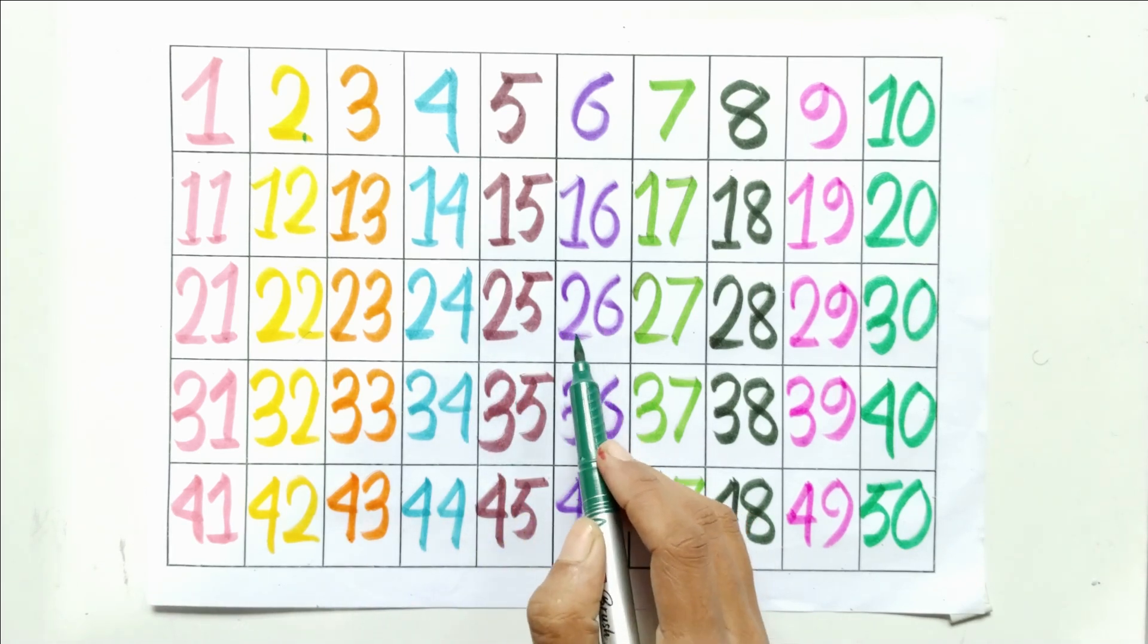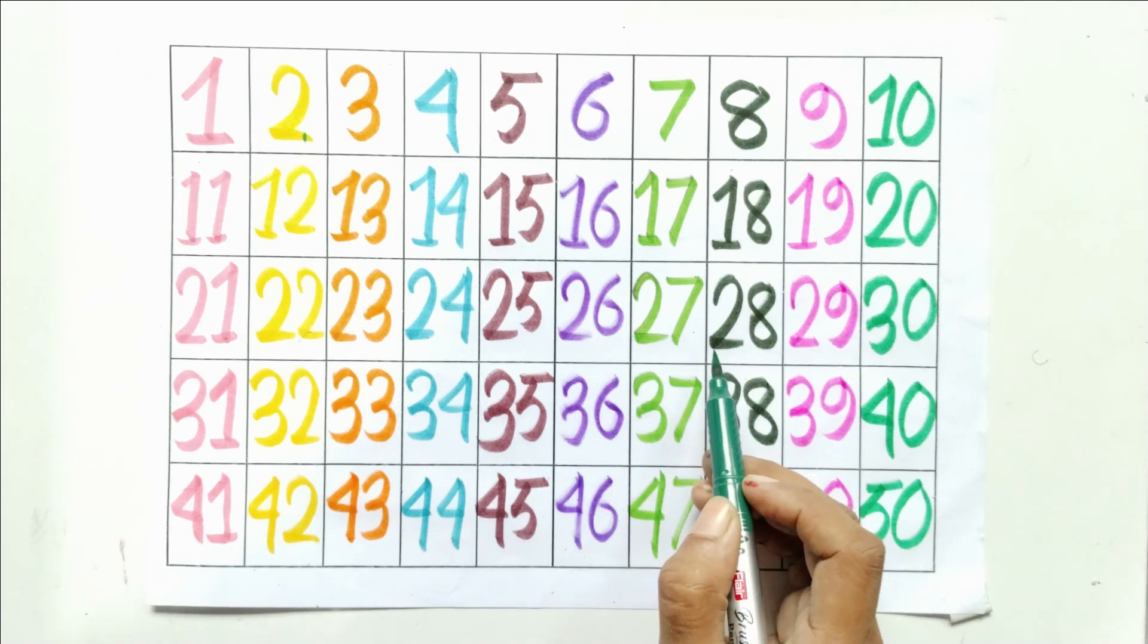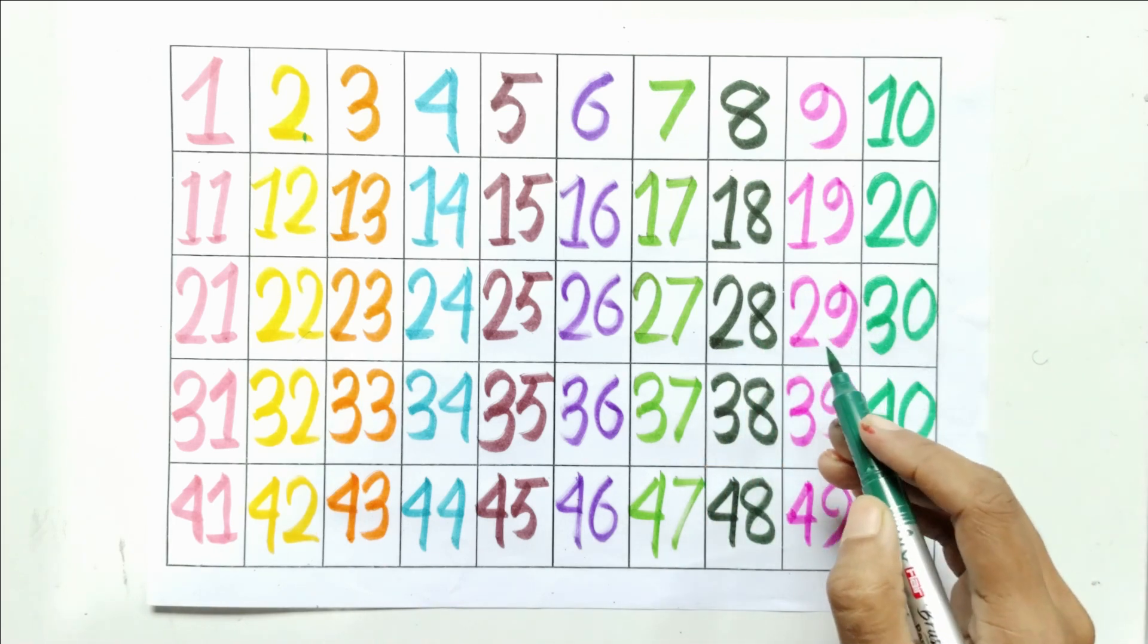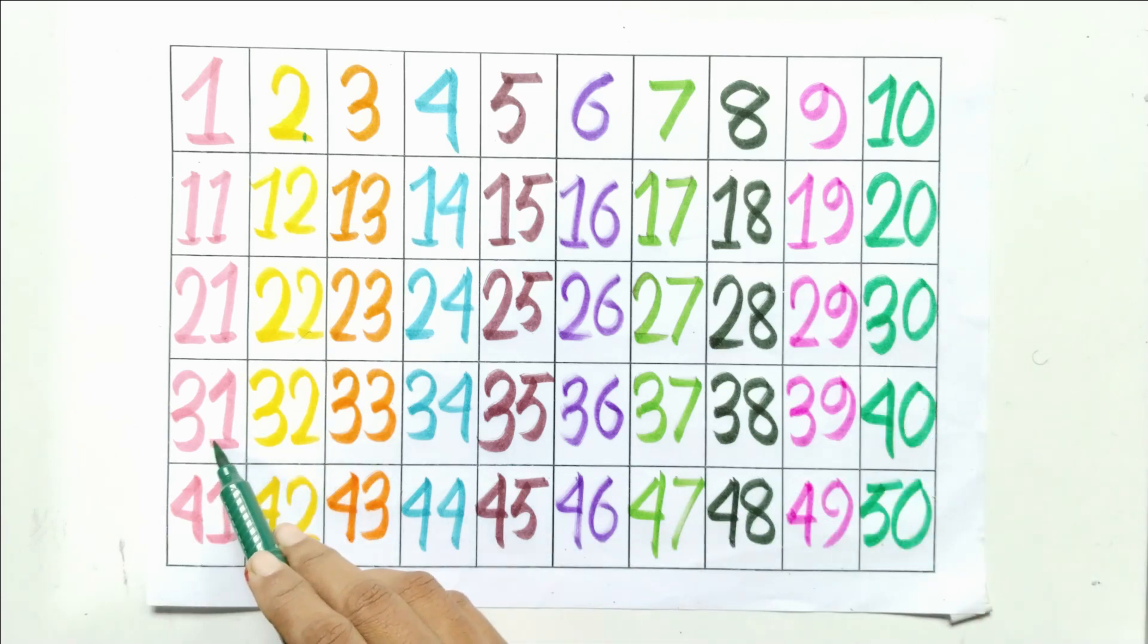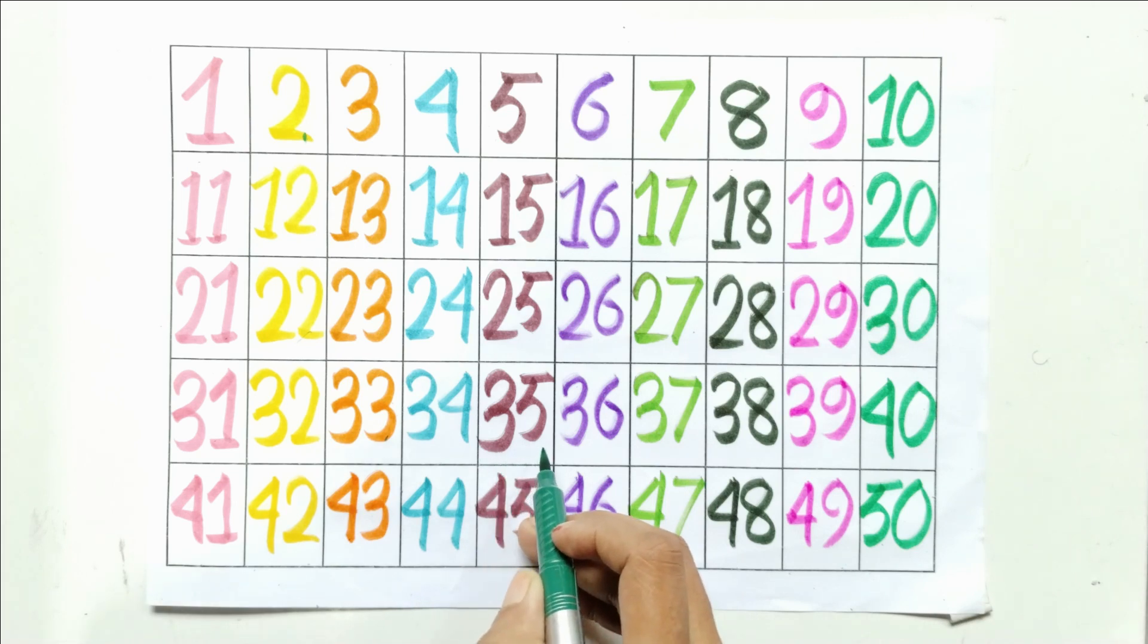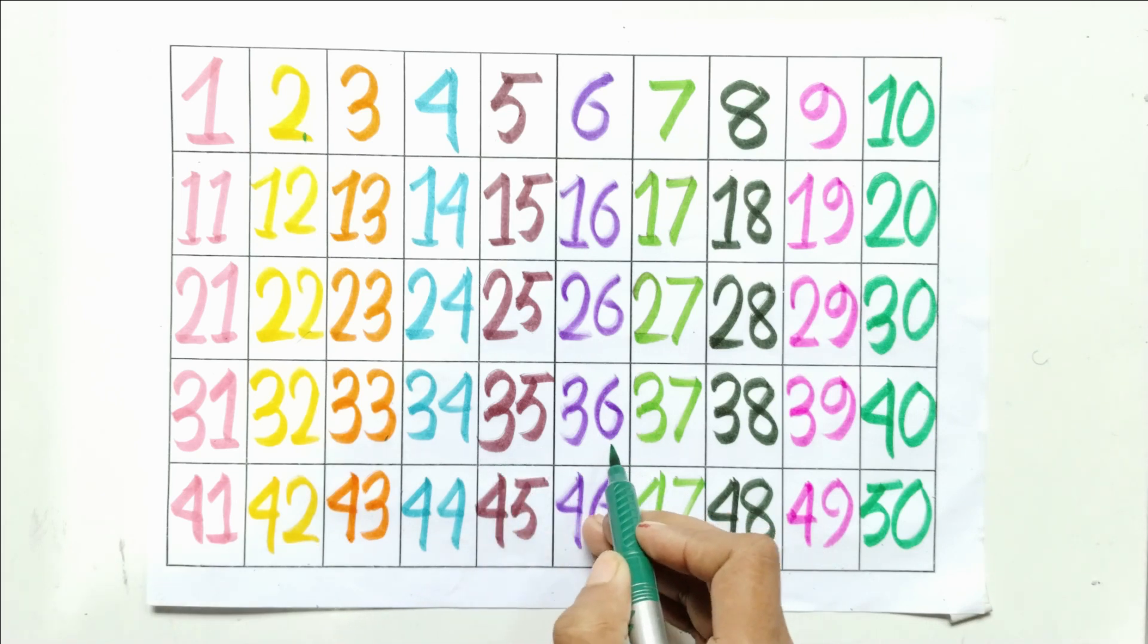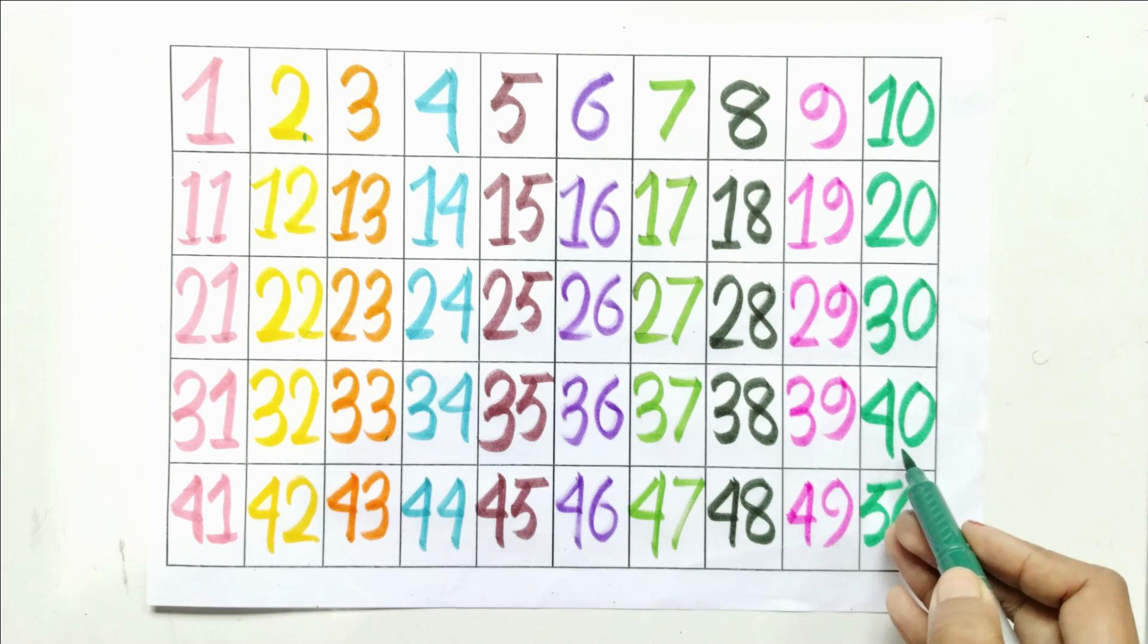Twenty-four, twenty-five, twenty-six, twenty-seven, twenty-eight, twenty-nine, thirty, thirty-one, thirty-two, thirty-three, thirty-four, thirty-five, thirty-six, thirty-seven, thirty-eight, thirty-nine, forty.